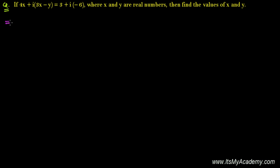Here we have a very simple example based on the equality of two complex numbers. We have two complex numbers equal: 4x plus i times (3x minus y), and that equals 3 plus i times minus 6.